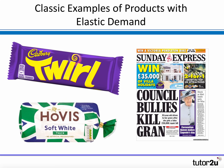Products with elastic demand — PED more than one — tend to be those where there are lots of alternatives and it's easier to switch. If Cadbury Twirl increased its prices by 20%, chances are you'd be looking for an alternative — maybe a Twix or a Mars bar. Similarly, if Hovis bread increased its prices by 30%, you'd look for Warburton's or a supermarket own-brand alternative. And the same with newspapers — that's why you often find newspapers engaged in price wars, because customers are very sensitive to the price of their daily news.